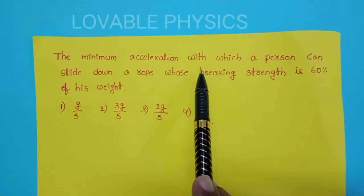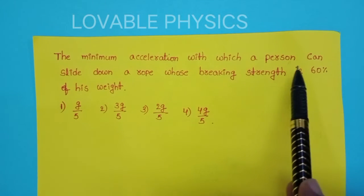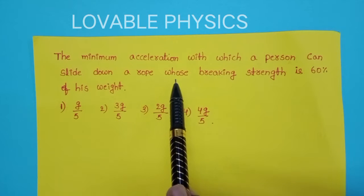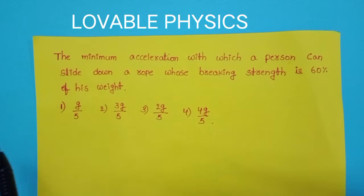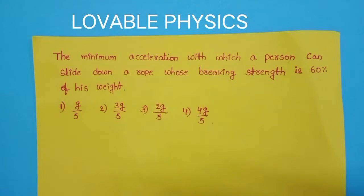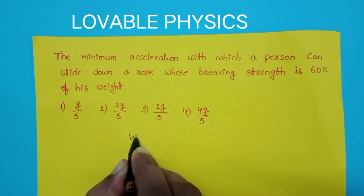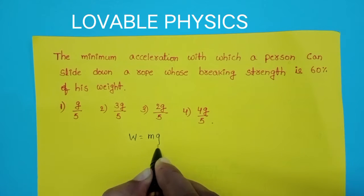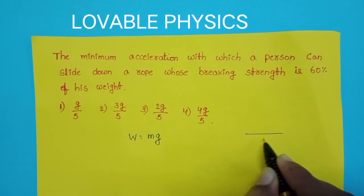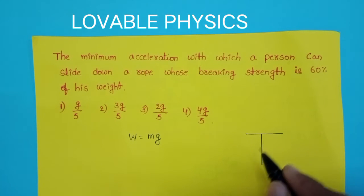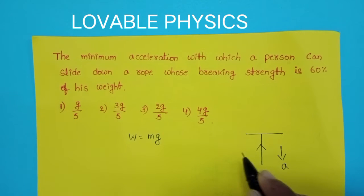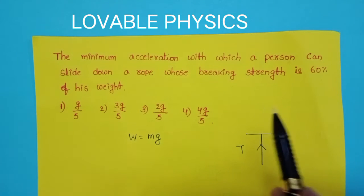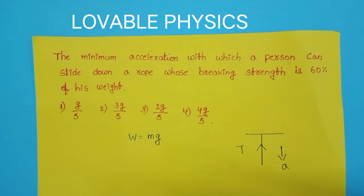The minimum acceleration with which a person can slide down a rope whose breaking strength is 60% of his weight. Let us take the weight of the person as mg. With the help of a rope, that person slides down with an acceleration. The breaking strength of this rope is 60% of his own weight.